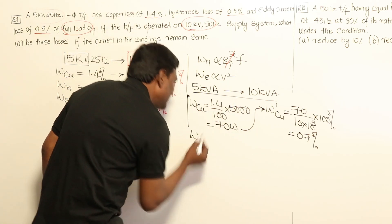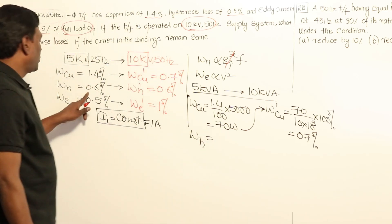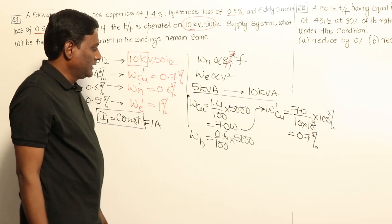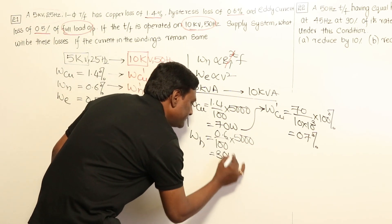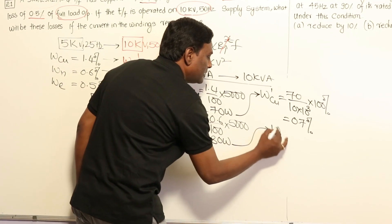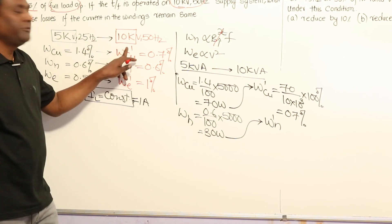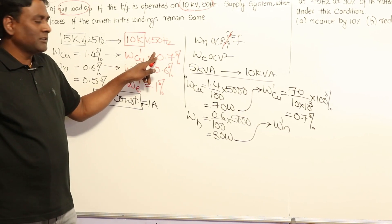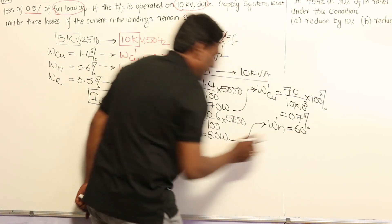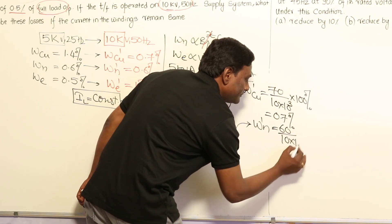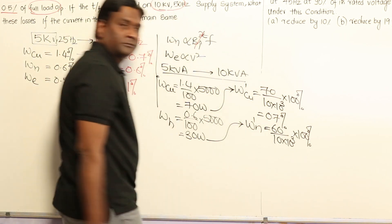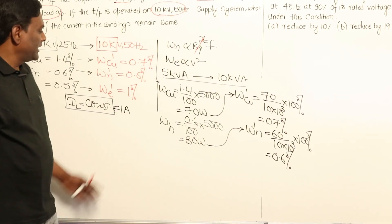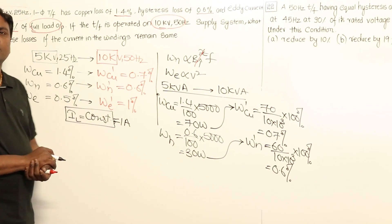Now hysteresis loss: 0.6% of 5000 = 30 watts. From the first case to the second, V/F ratio is maintained constant, so Bmax is constant and hysteresis loss is directly proportional to frequency. Frequency is doubled, so hysteresis loss doubles to 60 watts. As a percentage of 10,000: 60/10,000 × 100 = 0.6%. Similarly, eddy current loss can be calculated the same way.